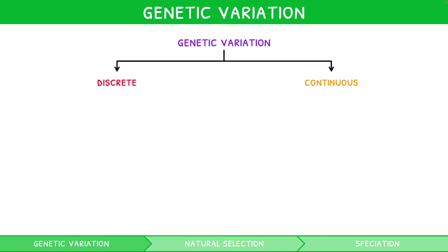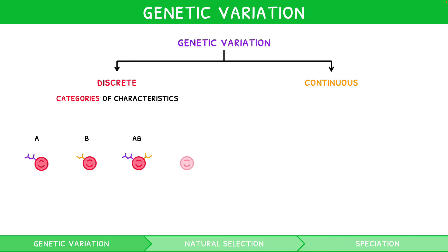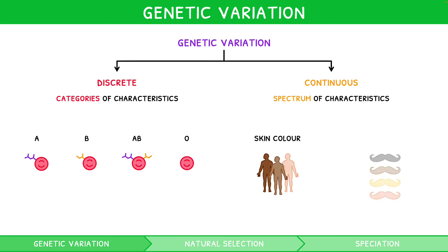Discrete variation occurs when the variation falls into distinct categories of characteristics. For example, blood type can be A, B, AB or O. Continuous variation occurs when the variation falls into a spectrum of characteristics, for example skin or hair colour.